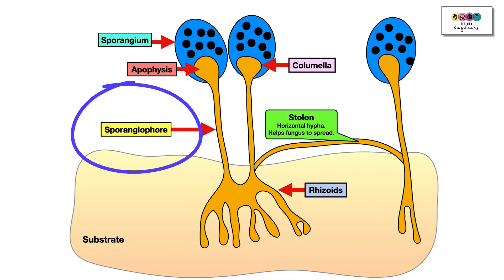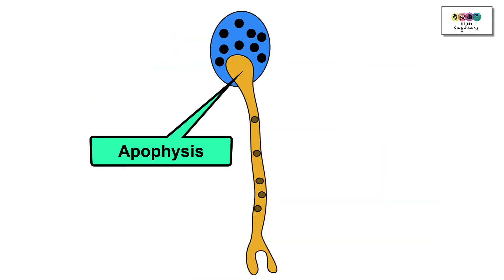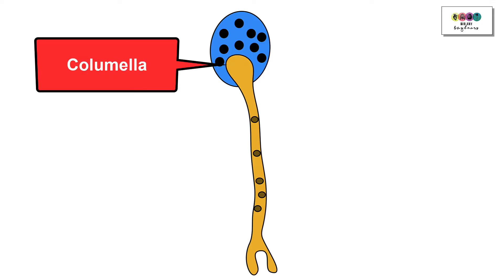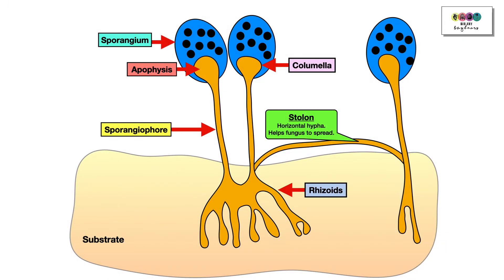The third type of hyphae is the sporangiophore — a vertical hypha that grows upwards from the substrate. At the top is a swelling known as the apophysis, and on top of this is a circular structure, the sporangium, where haploid spores develop. Separating the sporangium from the apophysis is an arch wall known as the columella. Make sure you can draw and label this diagram and look at past exam papers.